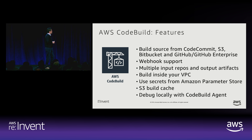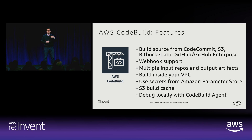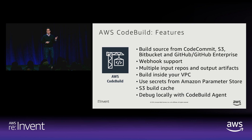CodeBuild is extensible — it doesn't have to just build something, it really can do anything you want to script. A few other features: webhook support, so if you're using Atlassian, GitHub, or GitHub Enterprise, they can have webhooks that go right into CodeBuild. Multiple input repos and outputs on the same build instance are possible. By default it goes into a service account, but you can also have it in your VPC because you want to leverage things in your VPC. You can use environment variables and secrets from Parameter Store, and you can use a cache — right now it's S3 — for speeding things up.